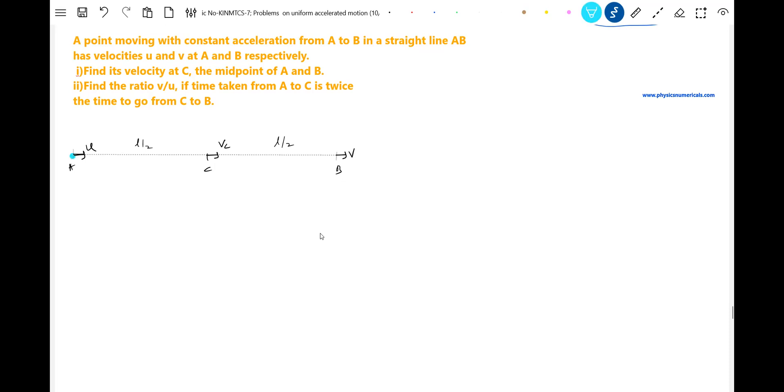Look at these points. Let me indicate the points. Let's write equations of motion. For this one, what are the equations of motion? vc squared minus u squared equal to 2a L by 2. Similarly for this, v squared minus vc squared equal to 2a L by 2.